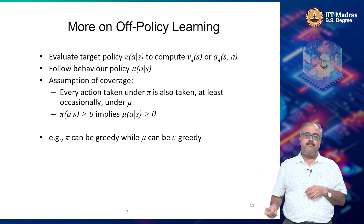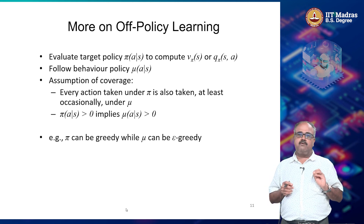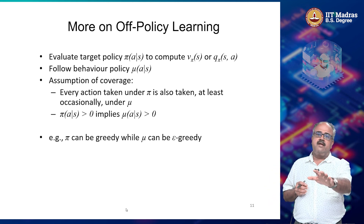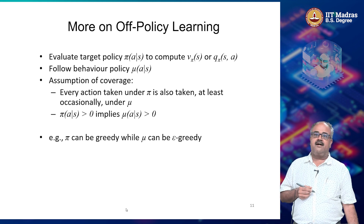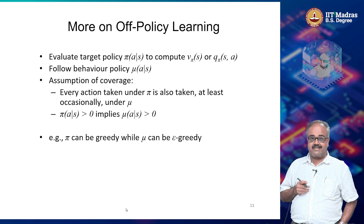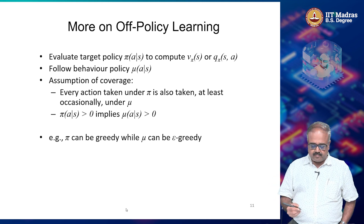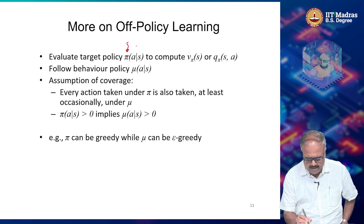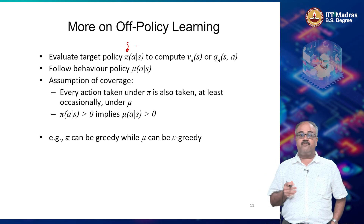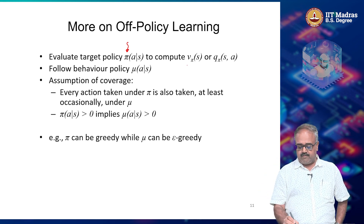The idea behind off-policy learning can be generalized even further, and I am going to cover this because later we will be using off-policy updates in many, many algorithms. So the idea is: you have one policy pi, which we call the target policy or the evaluation policy, for which you have to compute V-pi or Q-pi.